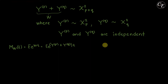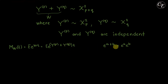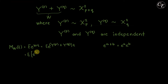From algebra we know that e raised to A plus B is equal to e raised to A times e raised to B. Distributing t for each term and using this, we have the expectation of e raised to Y_p times t, times e raised to Y_q times t.